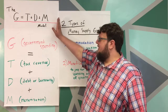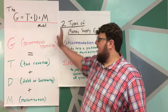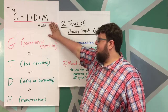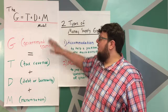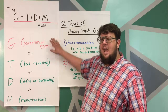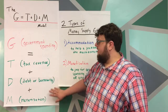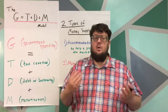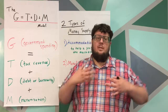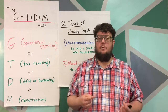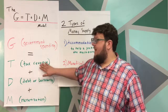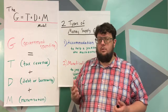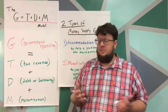We're diving into this a little bit deeper. Just to remind you, the G equals T plus D plus M model is where we take government spending and look at the choices the government has to make in regards to balancing their spending so they can continue operations, if they don't have enough tax revenue to fund their spending.